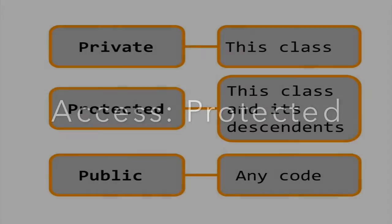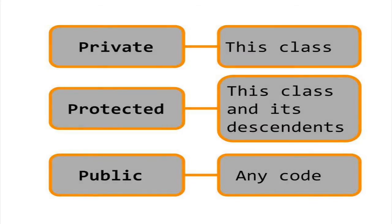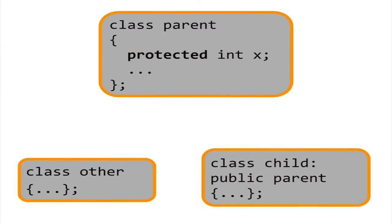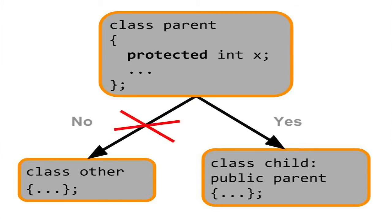In the previous video, we looked at three kinds of access specifiers in C++: Private, Public, and Protected. Remember that private data members are only accessible to the class that contains these members. By contrast, public data members are accessible from outside the class. Protected is like Private Plus. Only the parent and the child classes have access to the protected members of the parent class.